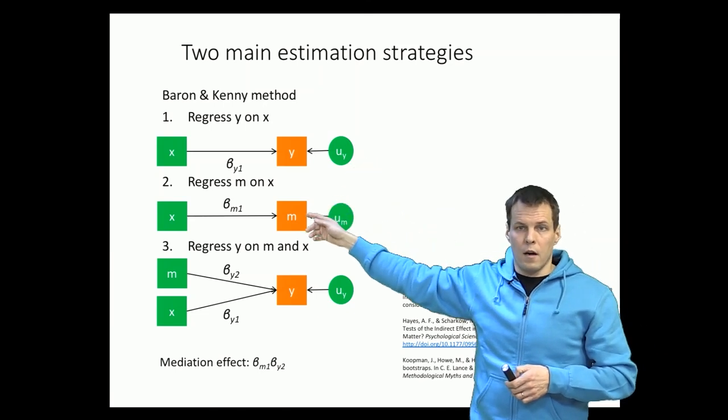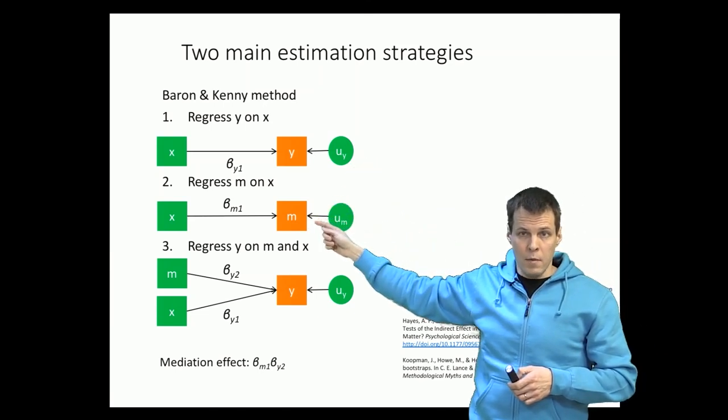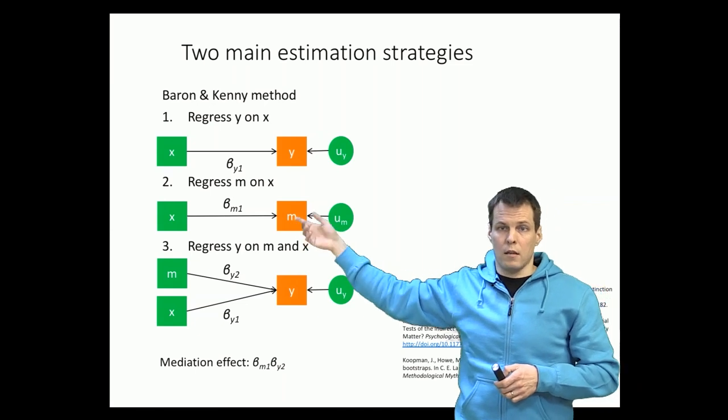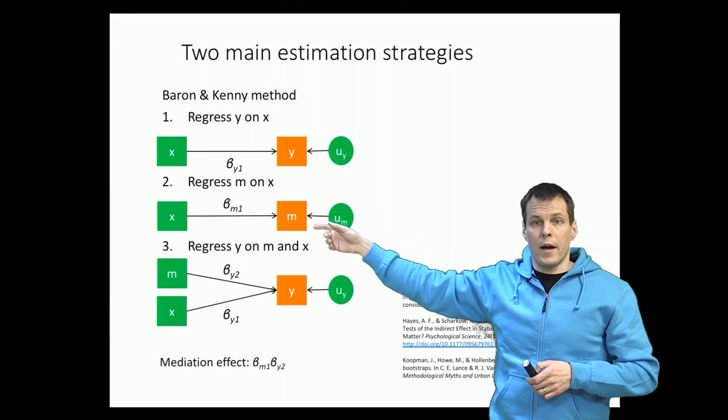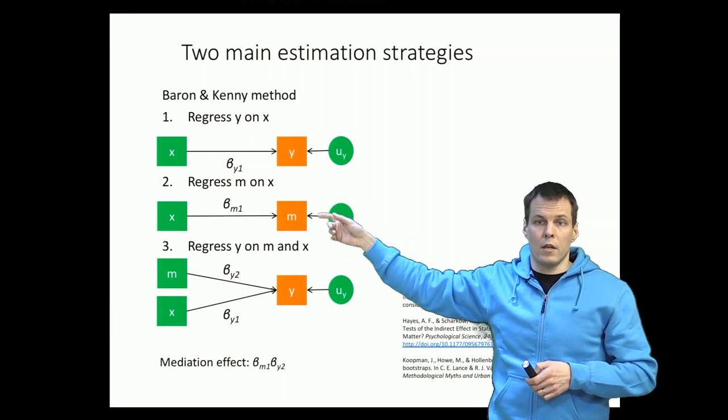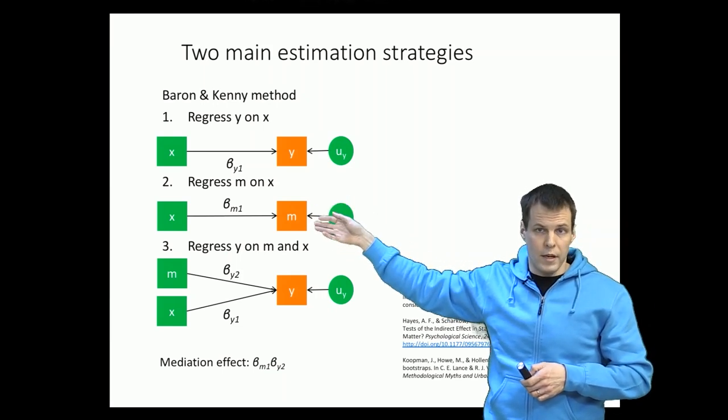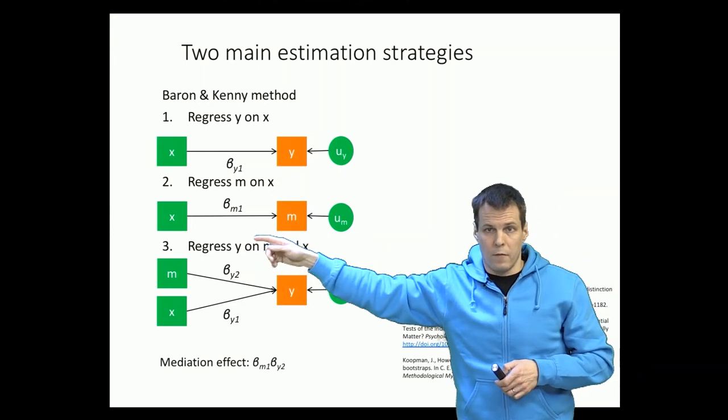Then we check if x is a potential cause of m. So we regress m on x and the controls that are relevant. Then finally, if there is a relationship, then we can conclude that it's possible that there is mediation because x influences m.